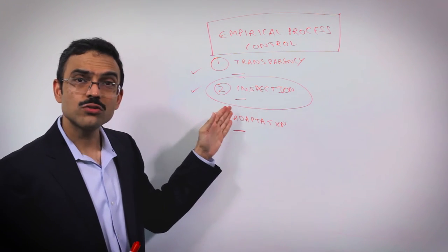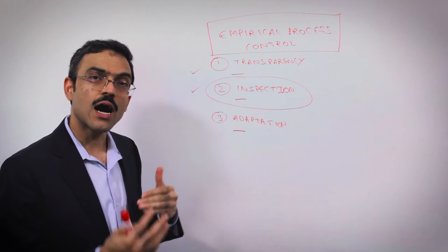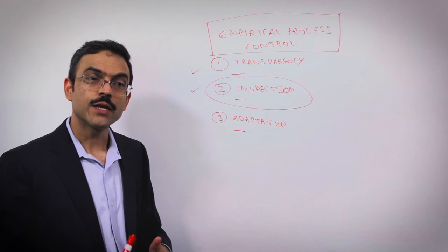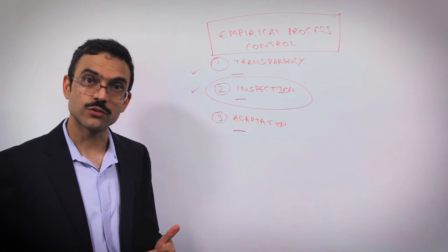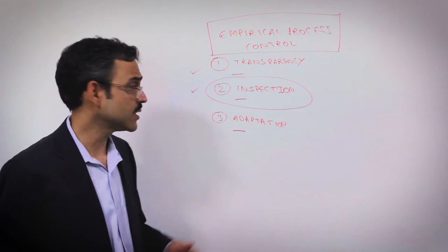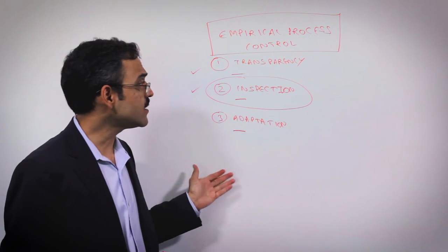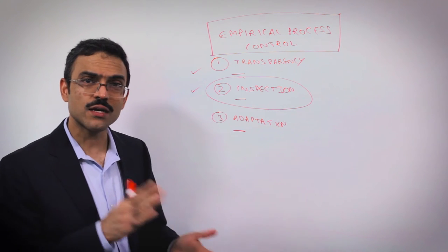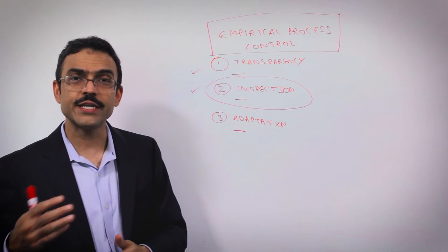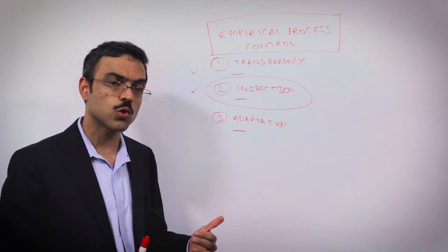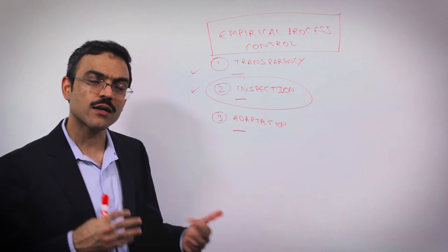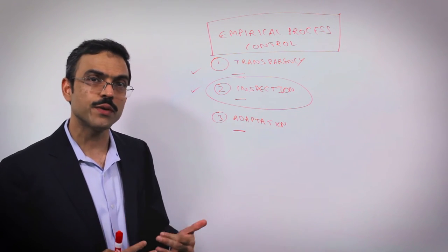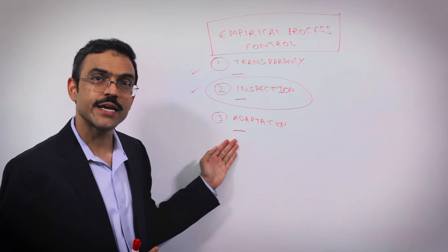Our teams also need the ability to compare how the product is today to where they thought it should be so that we could meet our customer commitments. That is inspection. And finally, the moment our teams realize there is some deviation—maybe there are too many defects, maybe performance is slow, the UI is not the way our client or client representatives want it to be—we must immediately take course correction.